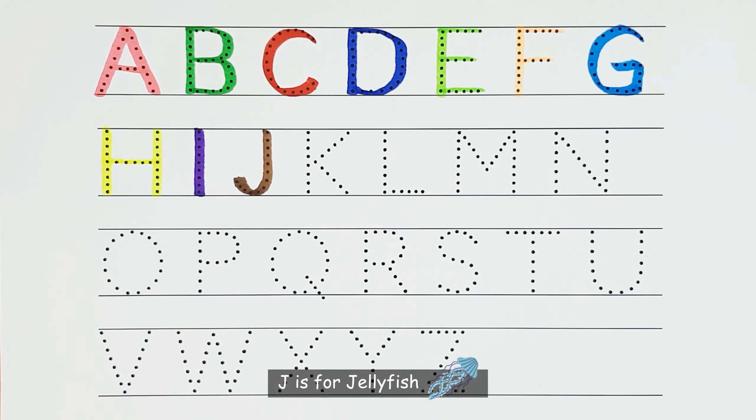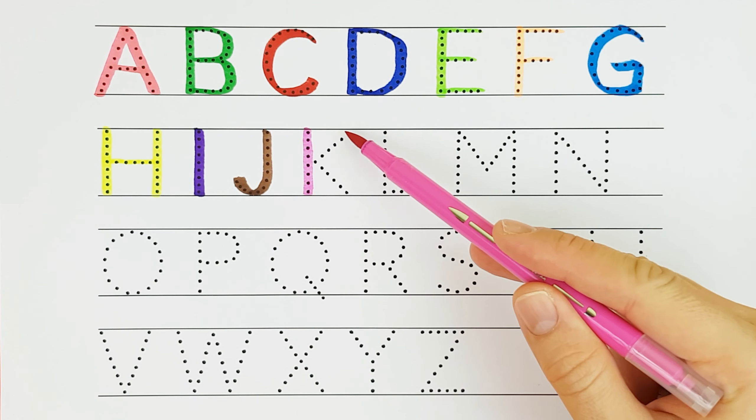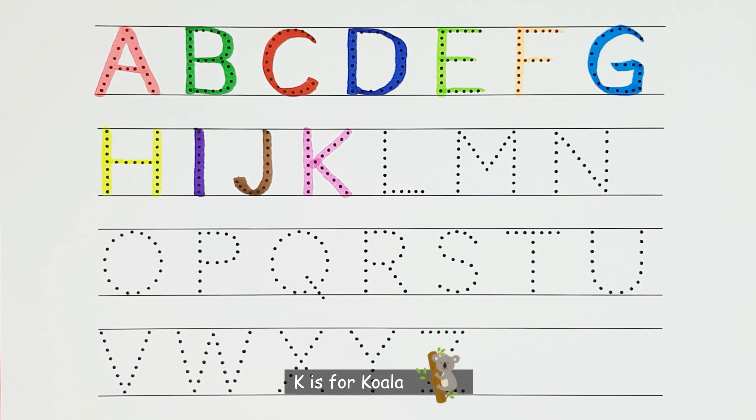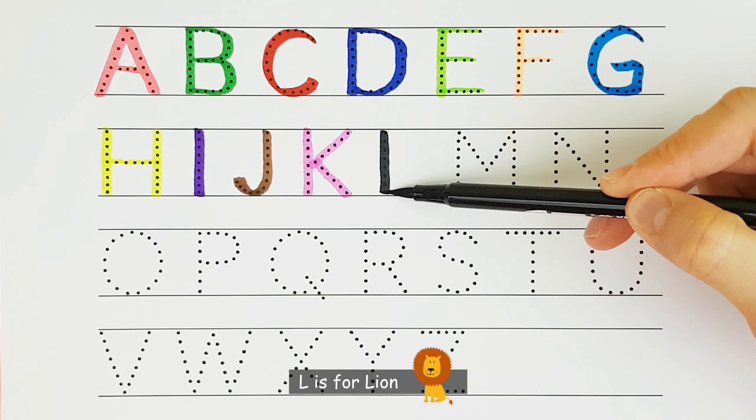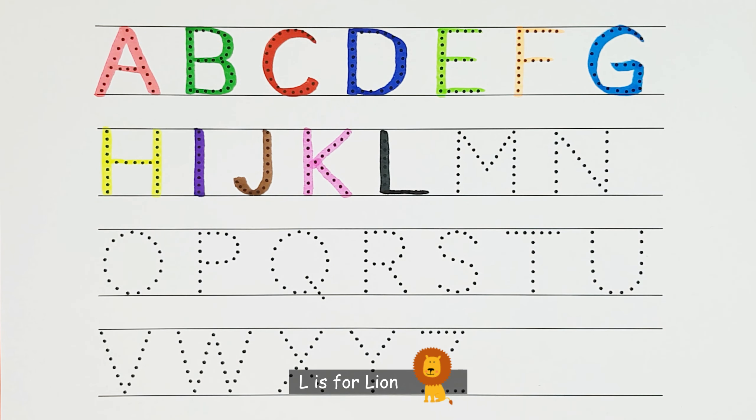J. J is for jellyfish. J. K. K is for koala. K. L. L is for lion. L.